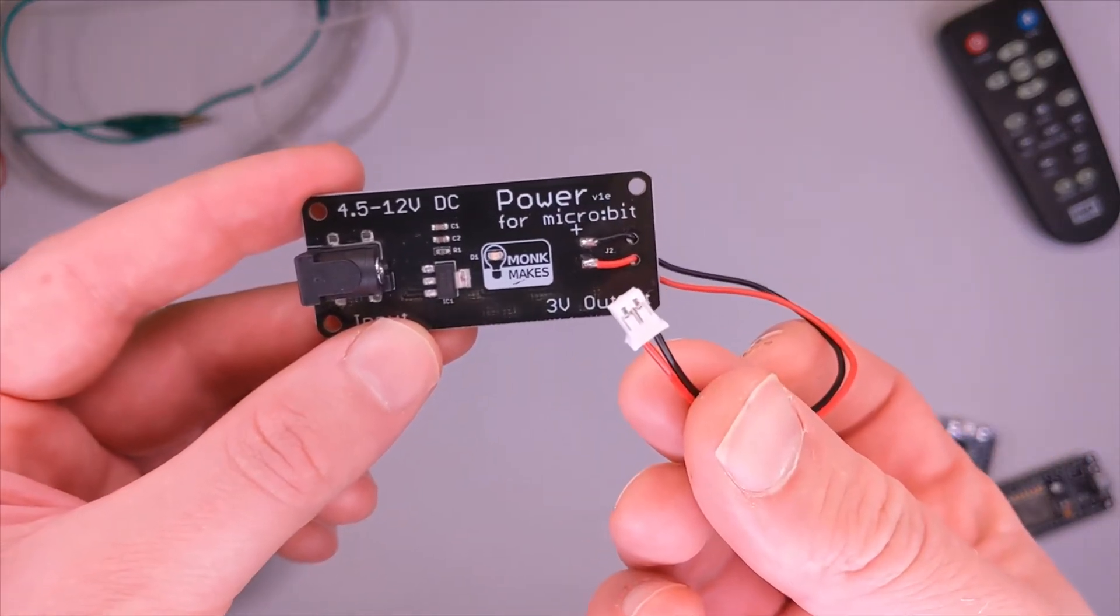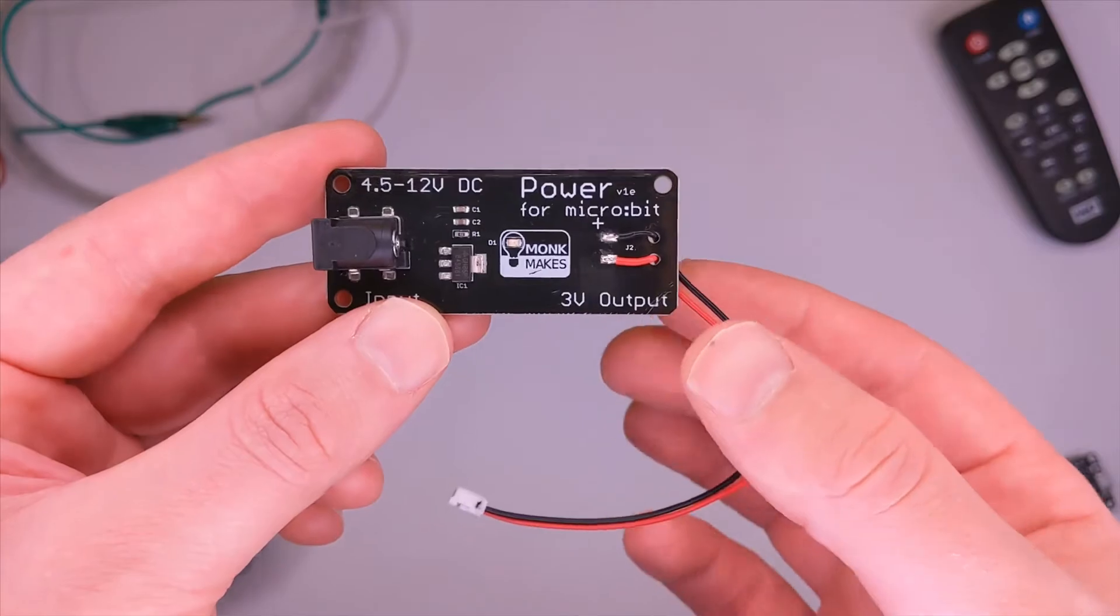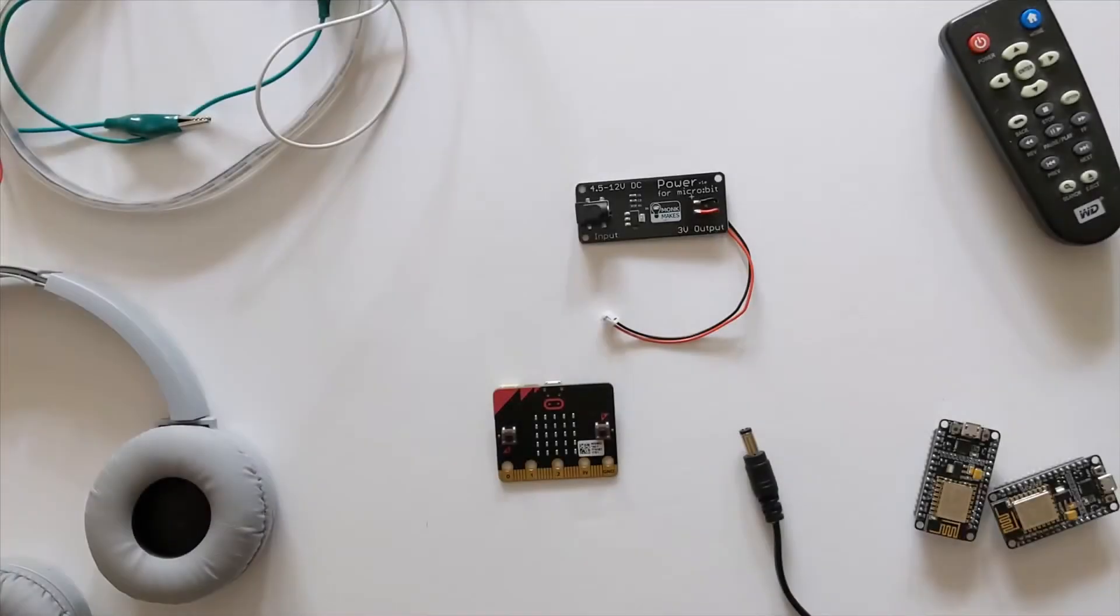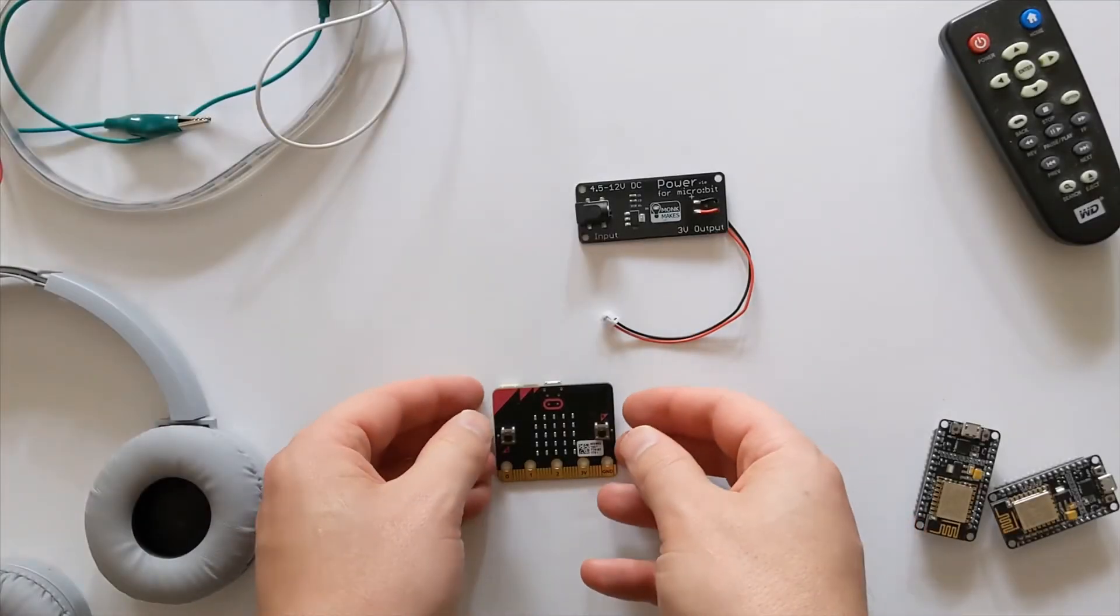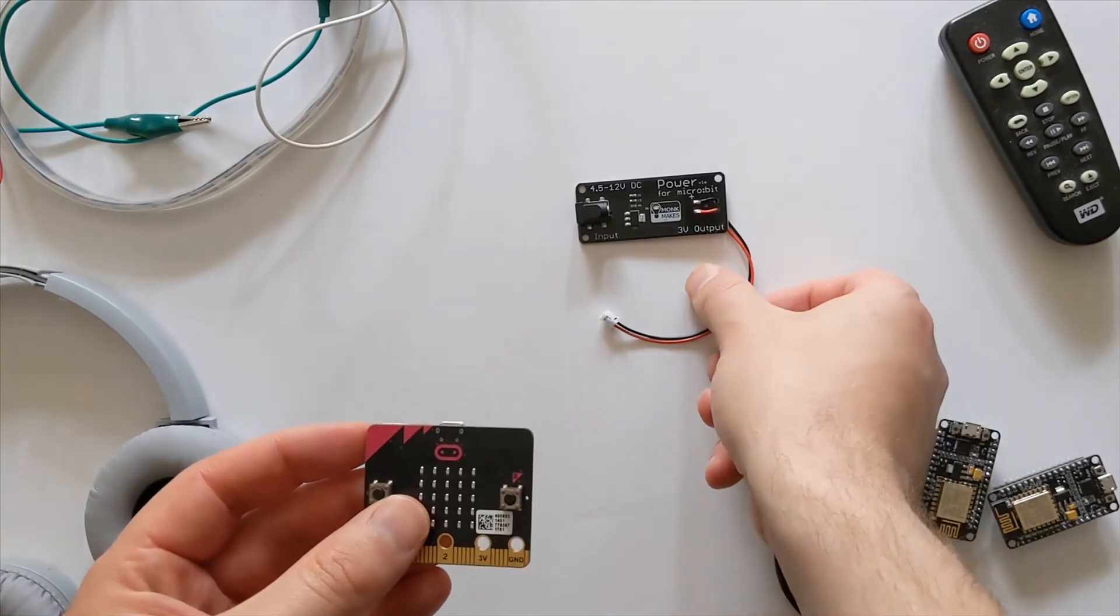This is a great way of providing a permanent installation of your micro:bit, maybe for controlling LED lights. This is a very straightforward device to use - we simply connect it to our battery connector on the micro:bit.